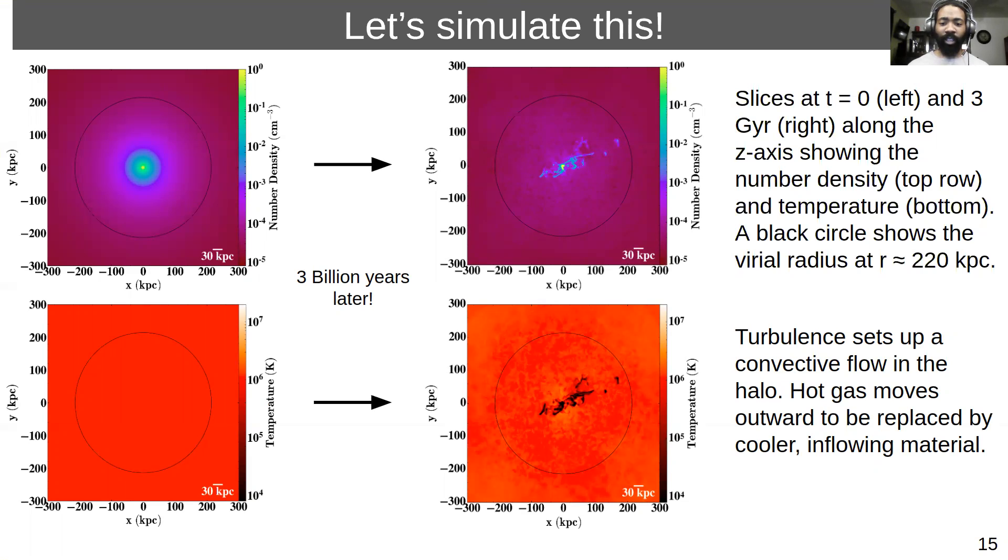We find that turbulence is able to set up this convective flow in the halo where hot gas is able to move to the outer halo, mix, and eventually condense and precipitate back towards the center.